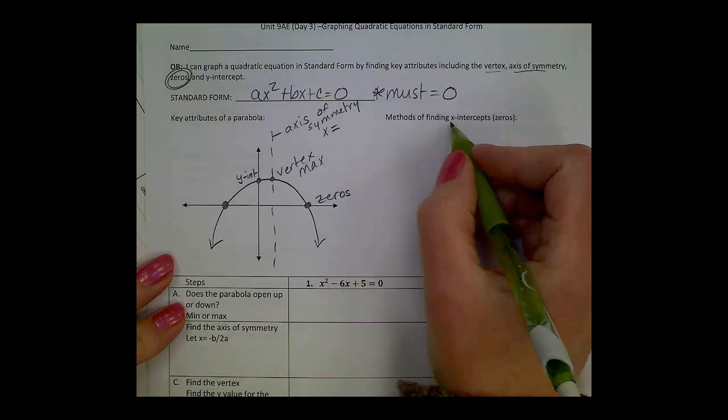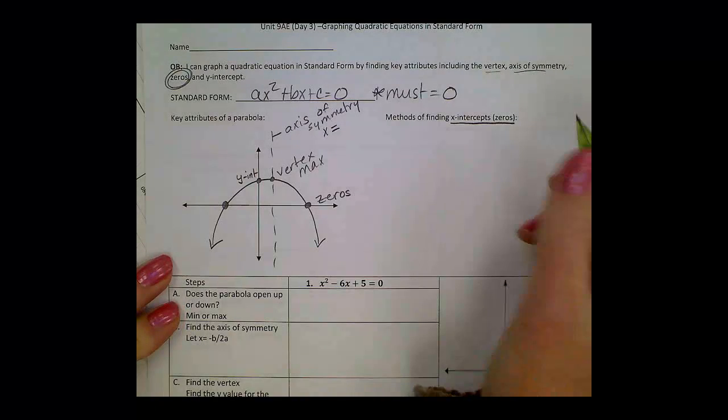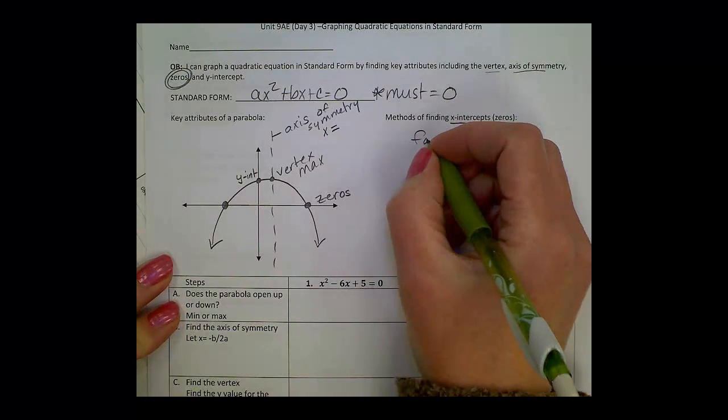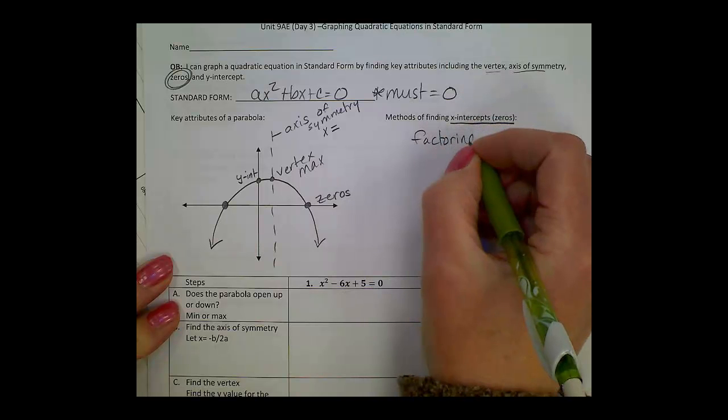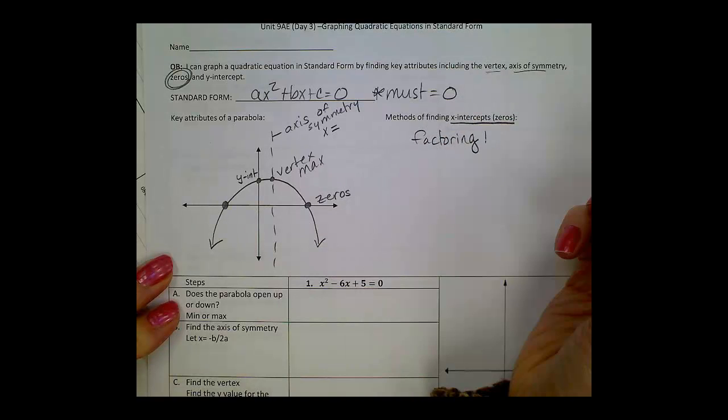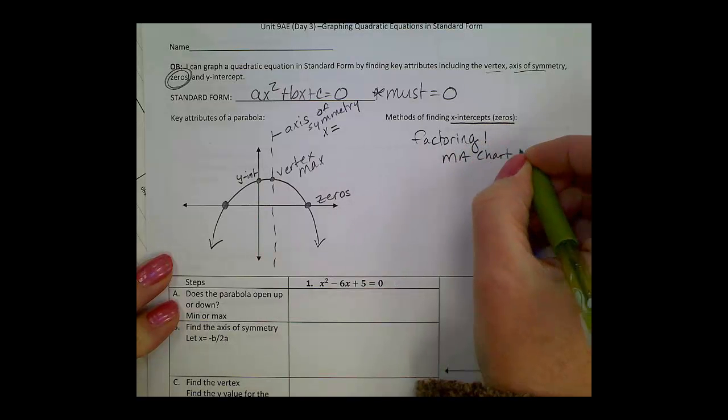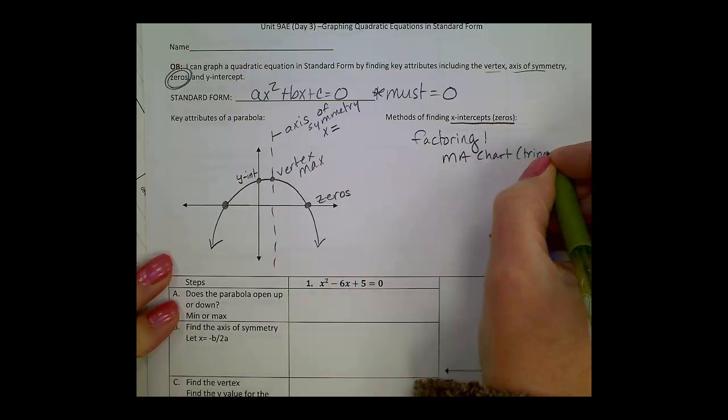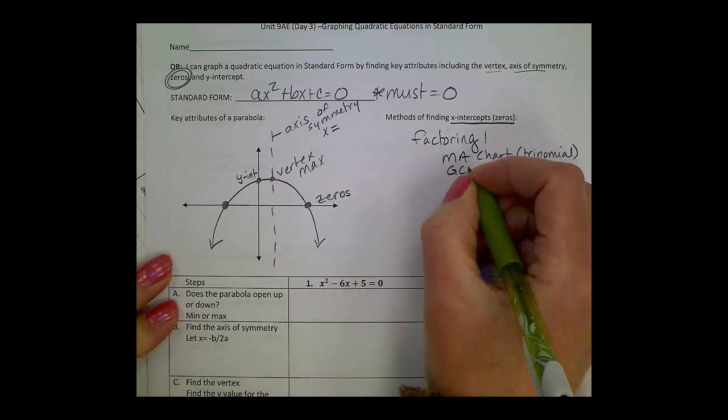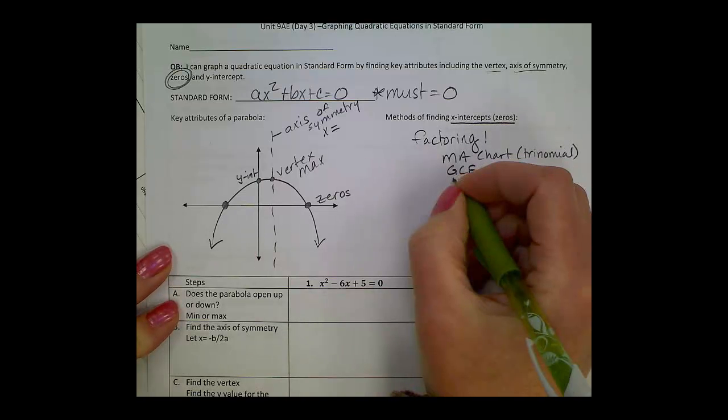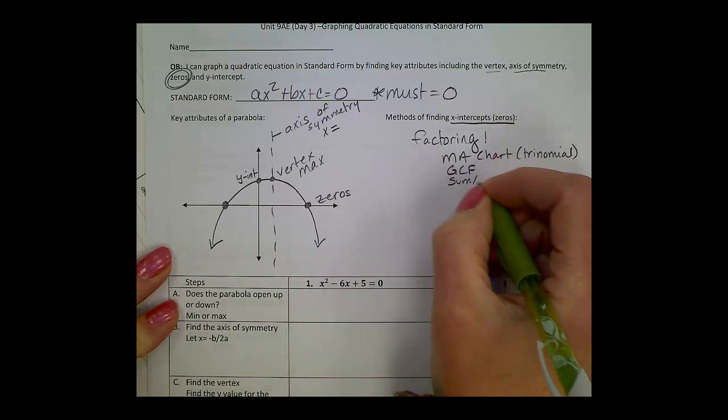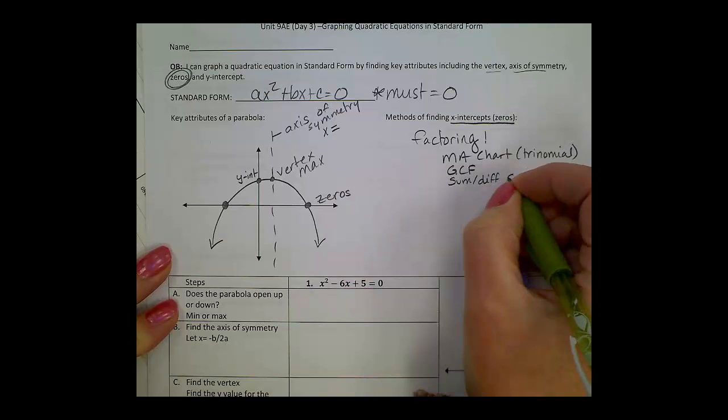Now, methods that we've used in the past for finding x-intercepts include factoring, and when factoring's easy, that's the way to go. Sometimes we use the Machart for a trinomial. Sometimes we can just pull out a GCF, and sometimes we might have sum and difference of squares or perfect squares.